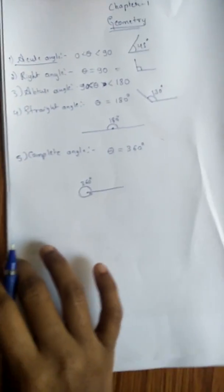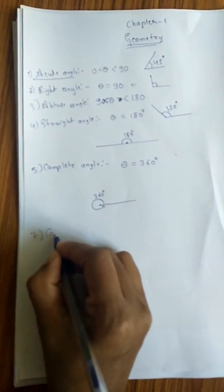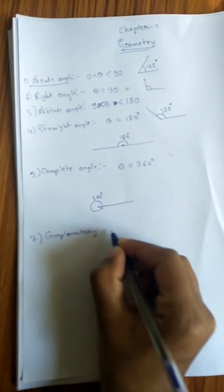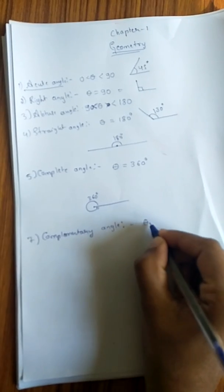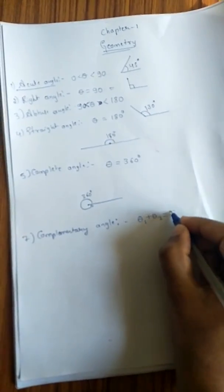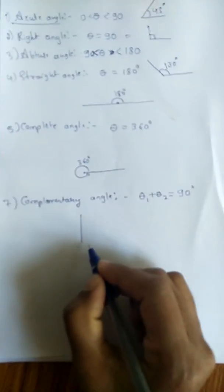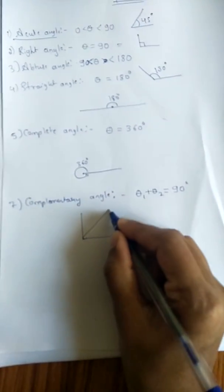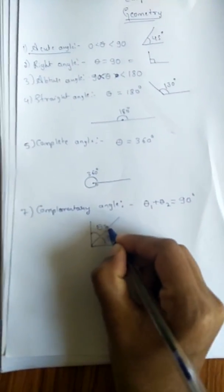Complementary angle and supplementary angle. First, complementary angle. Theta equals 90 degrees. Theta 1 and theta 2, when added, equal 90 degrees.